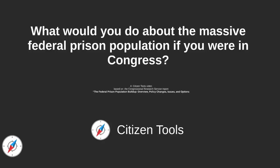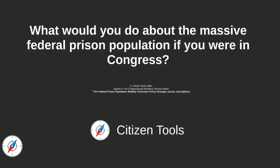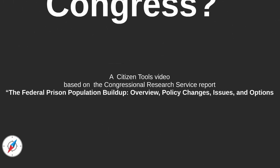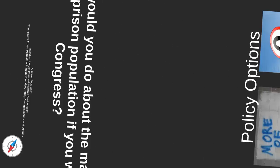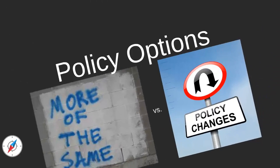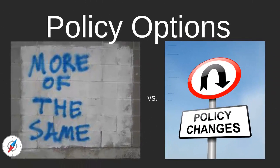Welcome to part 2 of Citizen Tools' video based on the 2013 Congressional Research Service Report titled 'The Federal Prison Population Buildup.' As discussed in part 1, the federal prison population has increased 800% since 1980. What are Congress' options for dealing with this massive growth?